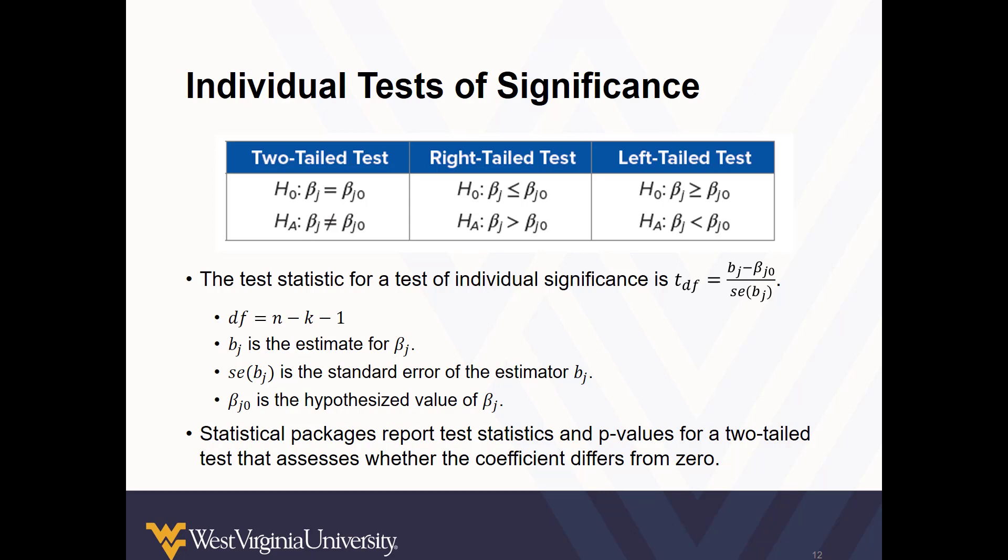The test statistic we use for individual coefficients is the t-test, calculated as shown. Statistical packages perform this test and report the results to you when you specify and run these different models.